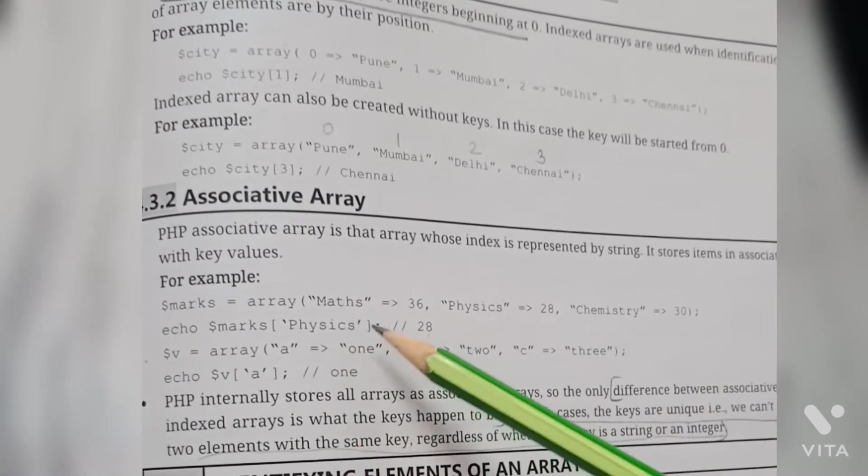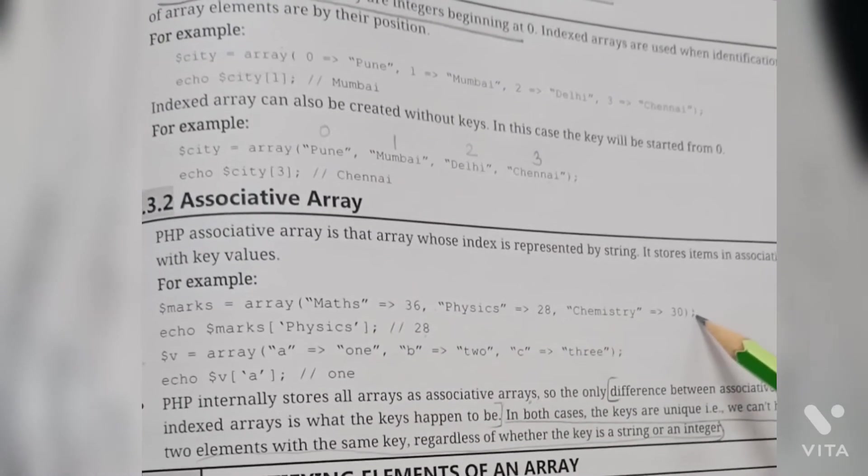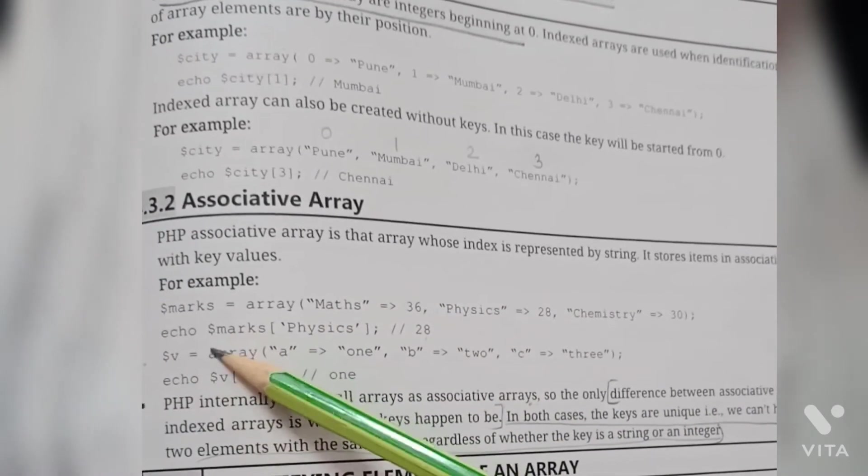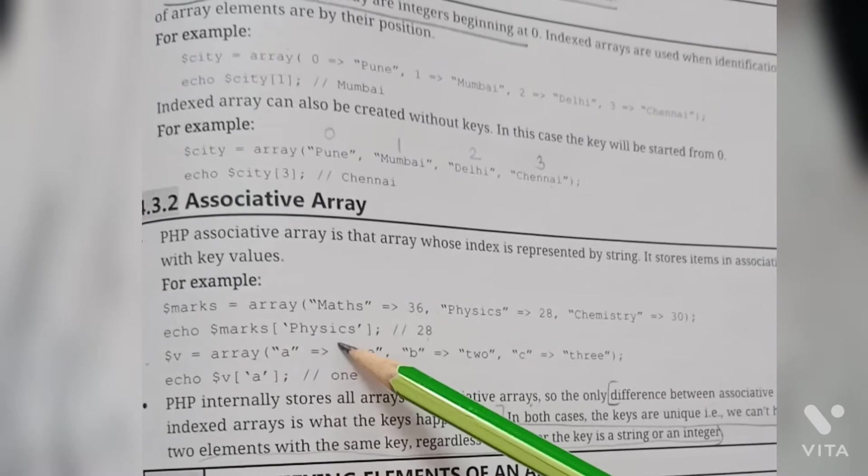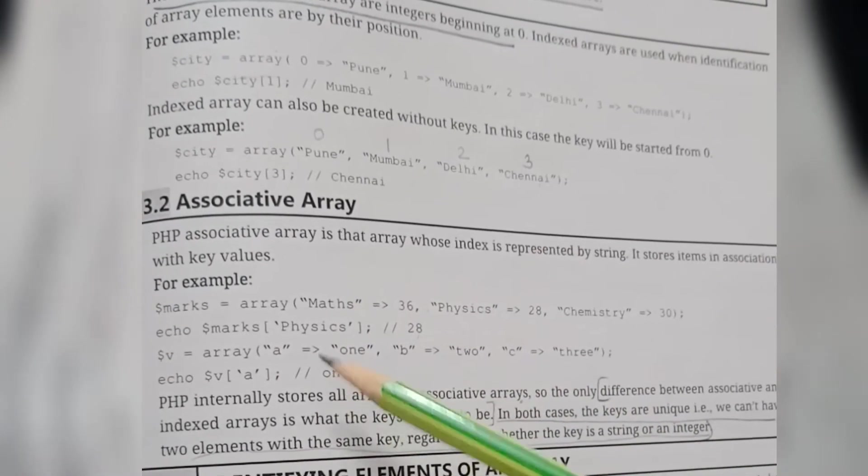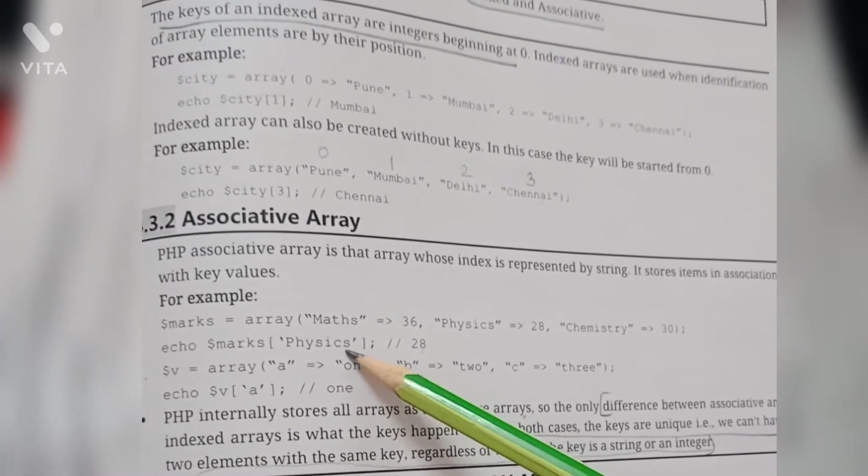Let's see the second code: echo dollar marks physics. This will give output as 28. This echo statement will give the value of physics in this array element. Physics is 28.